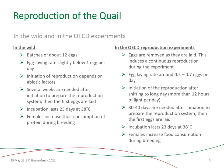In both cases, the initiation of reproduction is dependent on abiotic factors, such as day length for instance, and several weeks are needed to prepare the reproduction system before the first eggs are laid. In the OECD experiment, this initiation of reproduction is triggered by an increase in the number of hours of light per day.